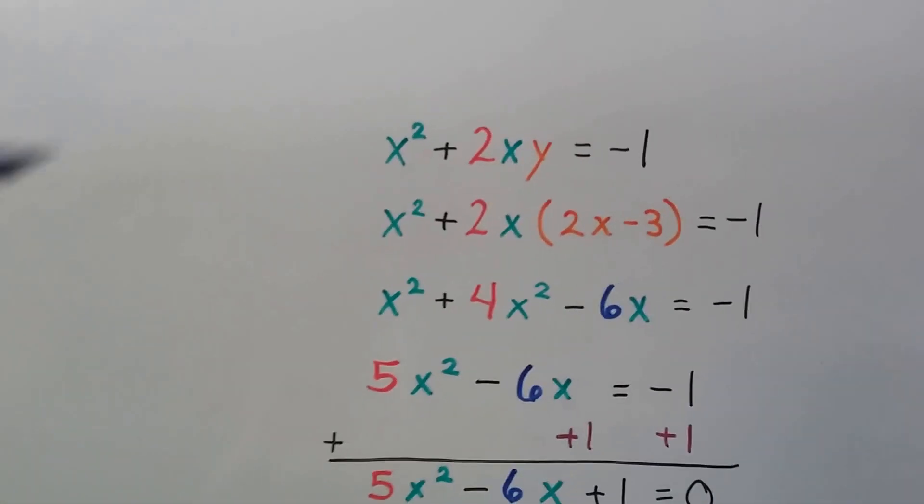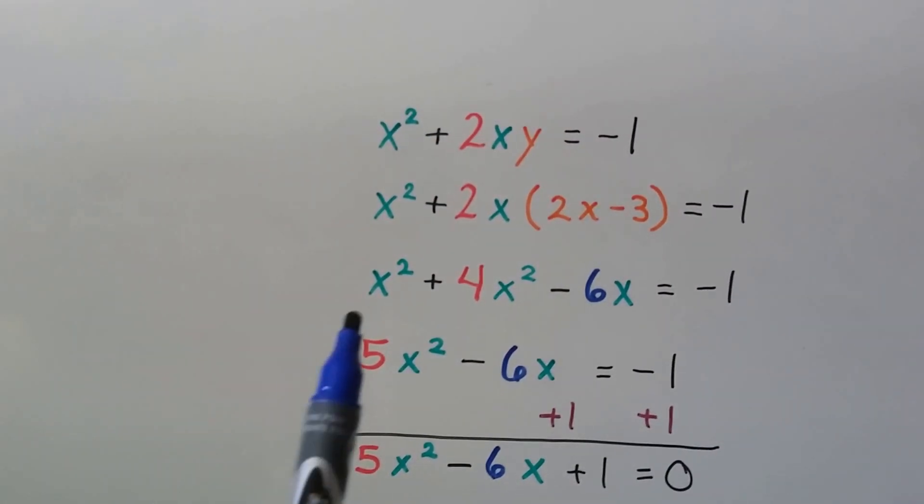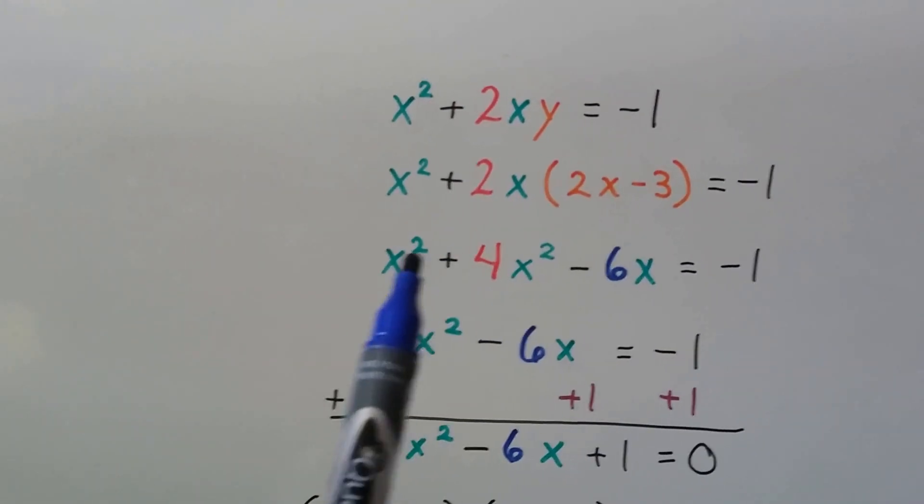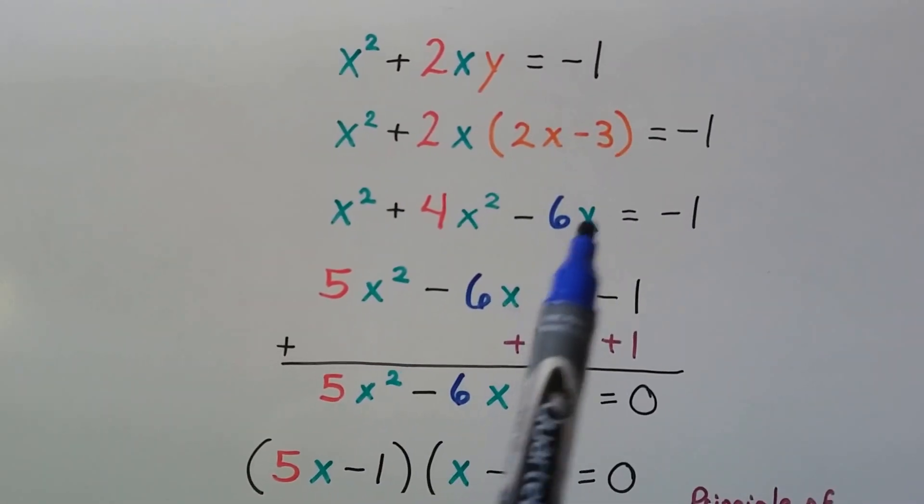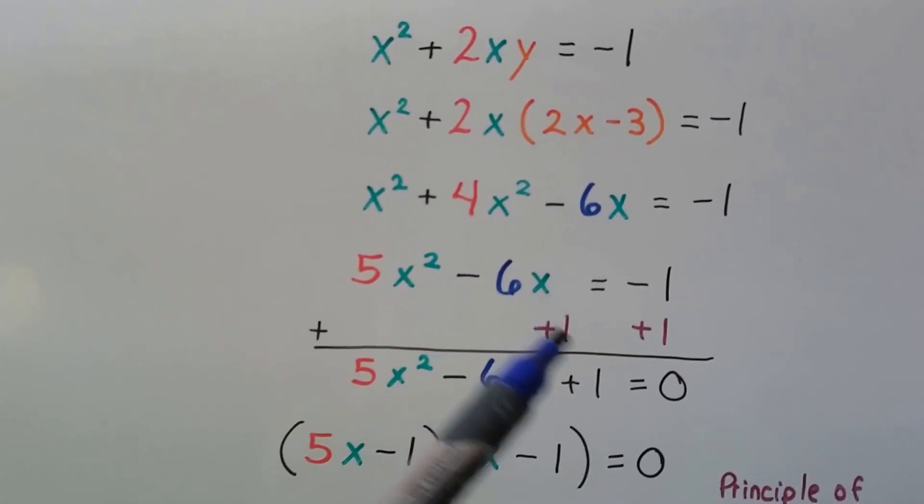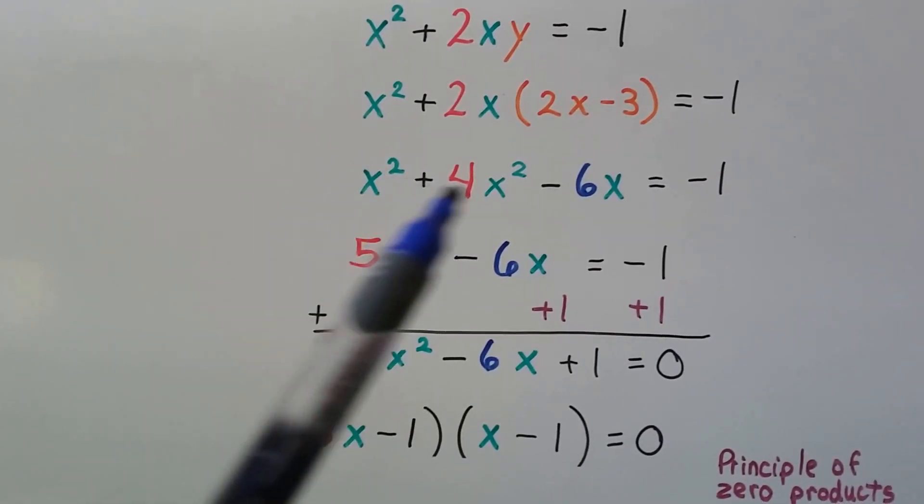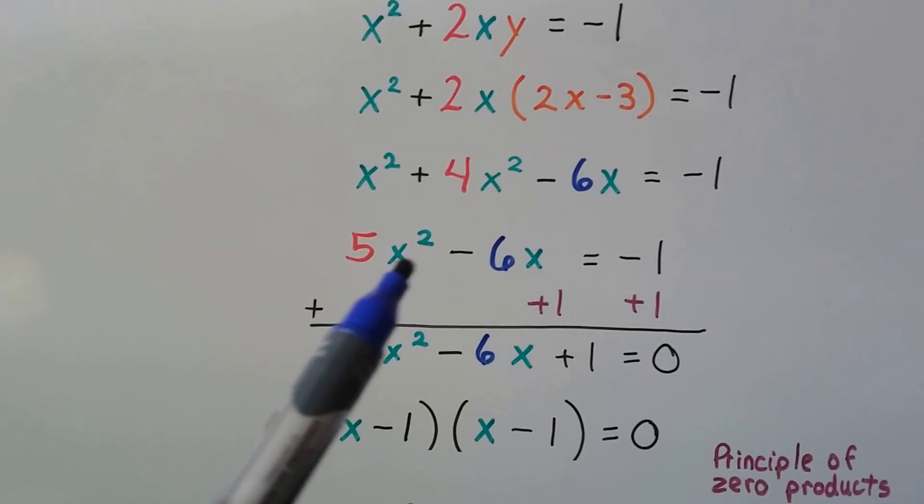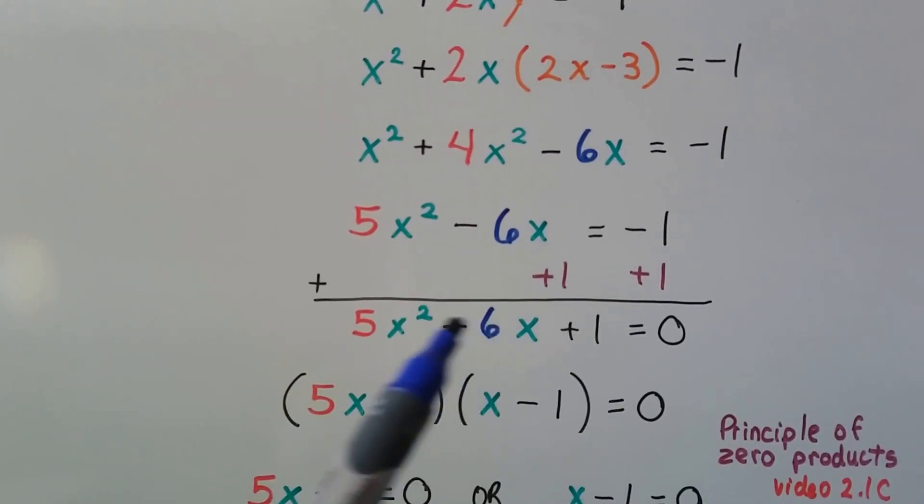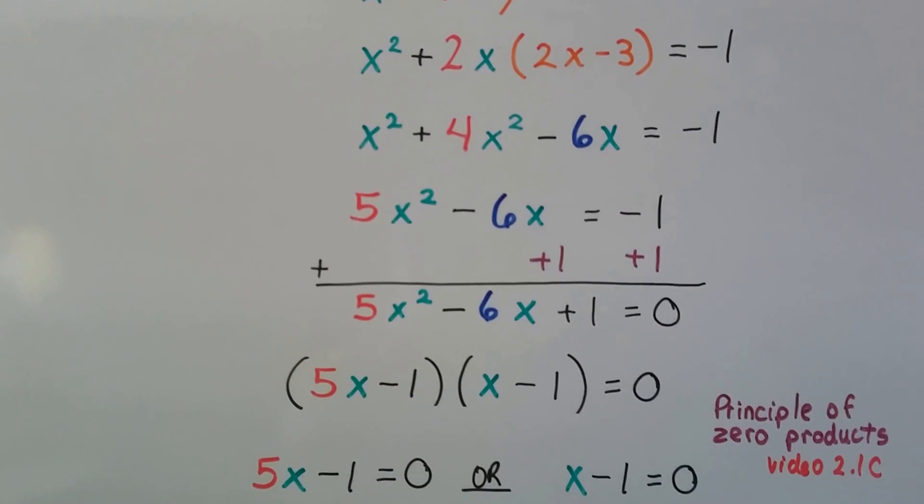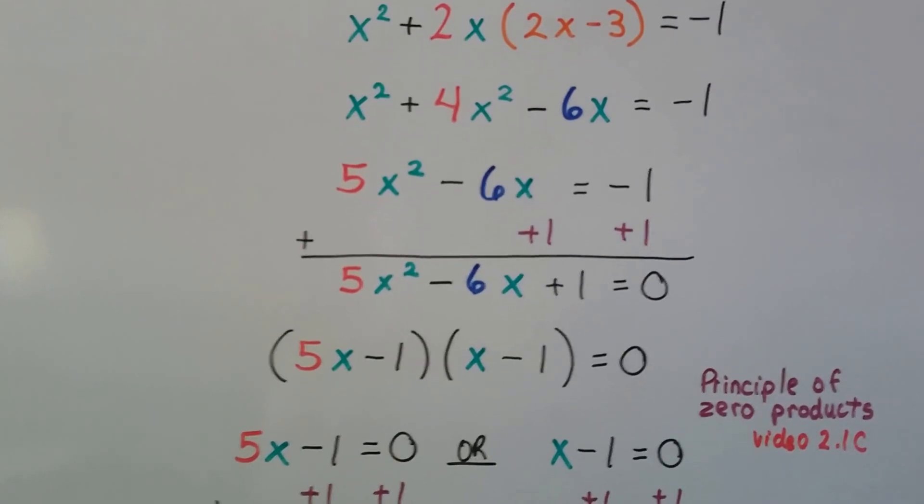We're going to substitute 2x - 3 for that y. We're going to distribute. So we're going to get x² + 4x² - 6x = -1. We can add 1 to each side to set this to equal 0. When we combine x² and 4x², we get 5x². So now we have 5x² - 6x + 1 = 0. Using that principle of zero products we learned back in Chapter 2 in video 2.1c, there'll be a link to that too in case you forgot.